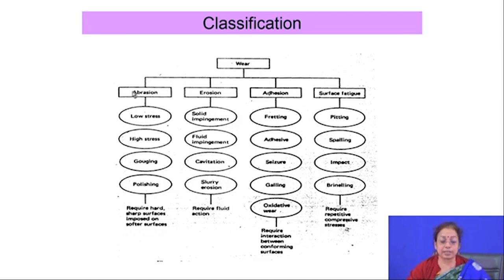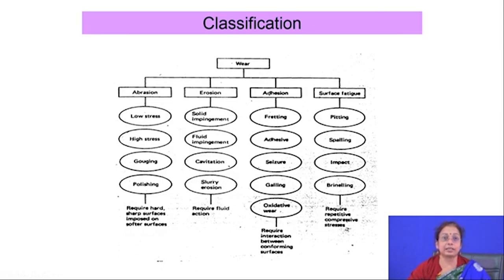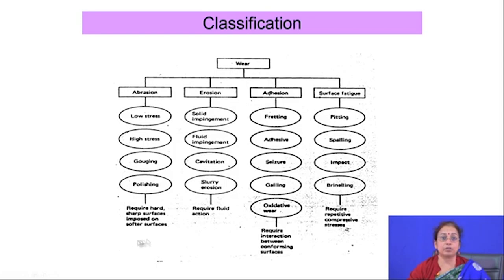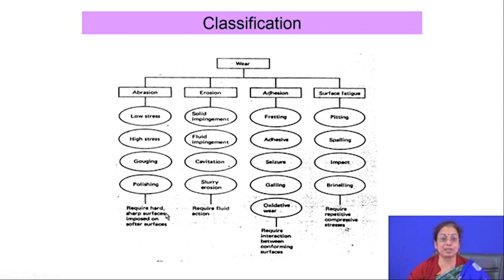The four basic modes of wear are: abrasive wear, which occurs when two mating surfaces have a large difference in hardness — when a very hard surface moves over a softer surface, the material loss is called abrasive wear. Abrasive wear requires a hard surface to be imposed on a softer surface, so there has to be a large difference in hardness.